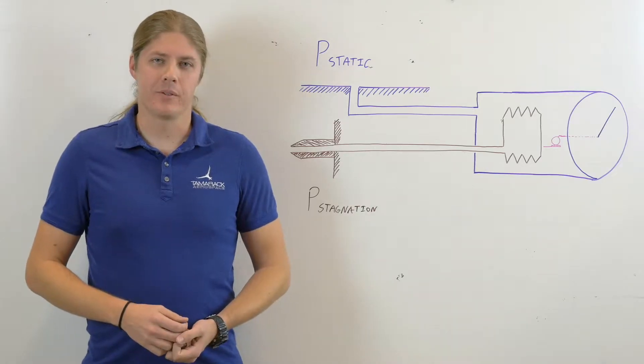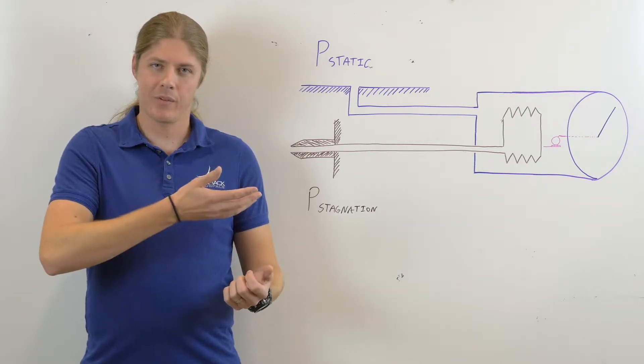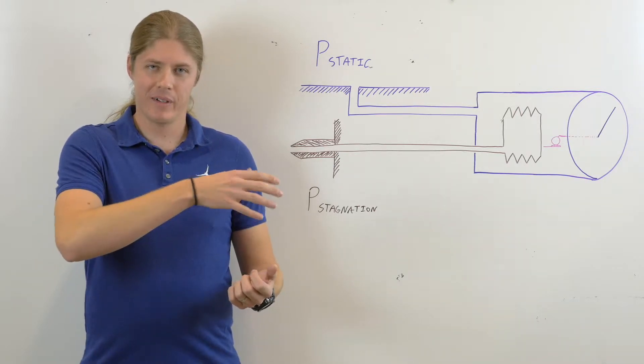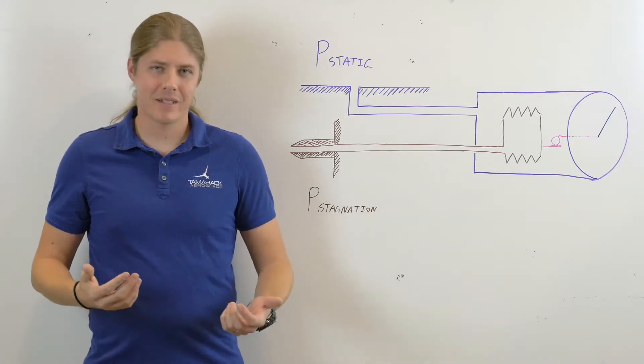The earliest and simplest method for measuring airspeed was a sort of a flat plate on an arm that swung out of the way with airflow hitting it and measured the airspeed on numbers on a sort of a protractor thing on the wing. It's crude, but it's effective.